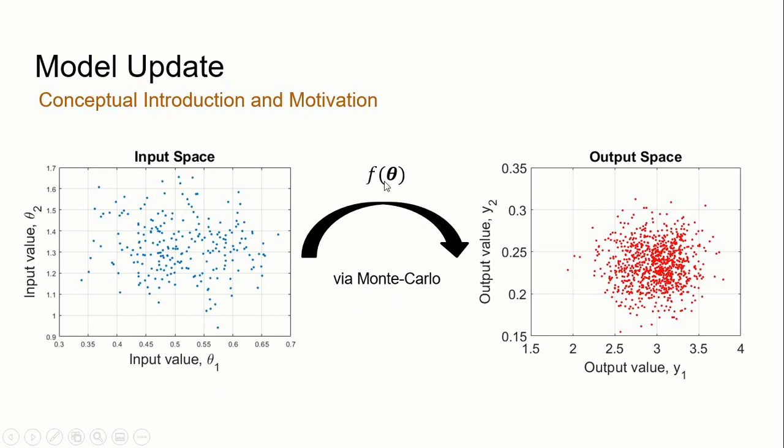And from there, each realization of the set of randomly sampled inputs will then form a random solution of the output in an output space. In essence, doing this process multiple times over many iterations using Monte Carlo technique will give you this scatter plot of the output space, as seen on the right.